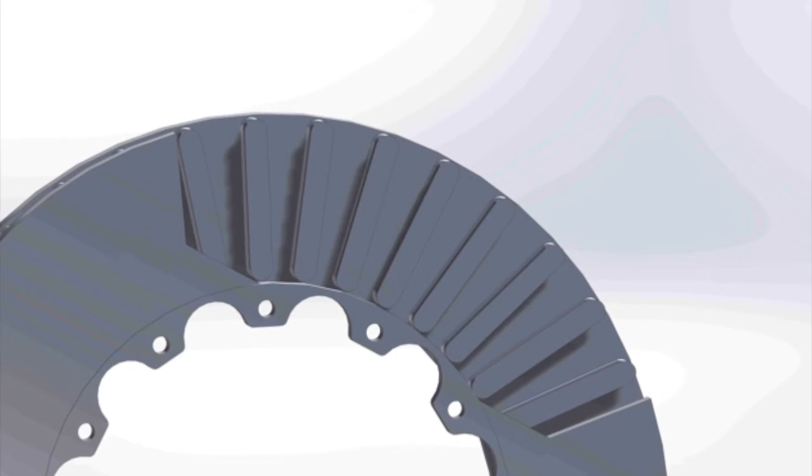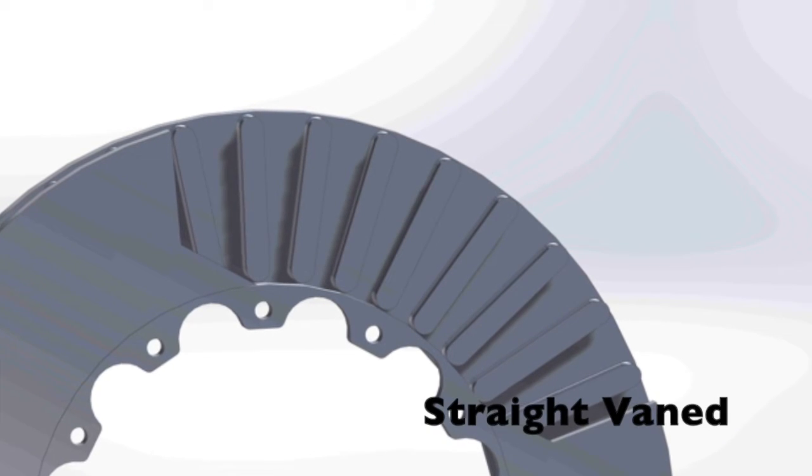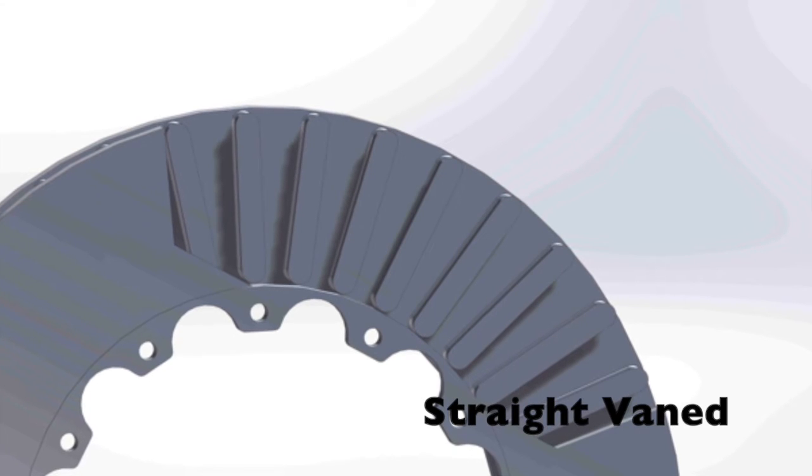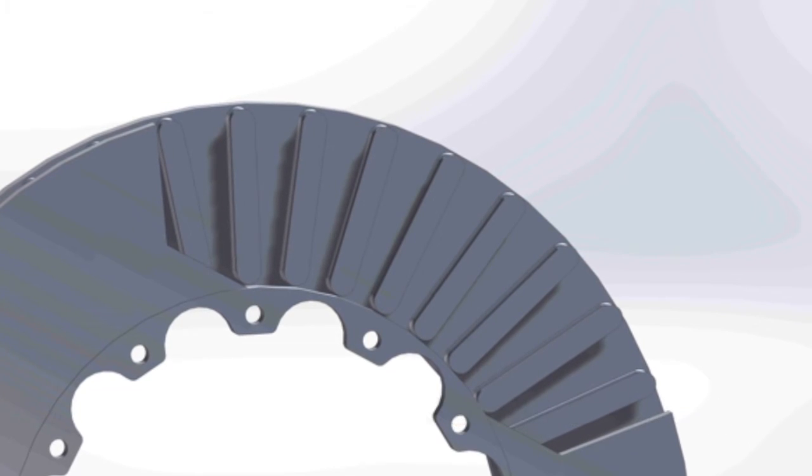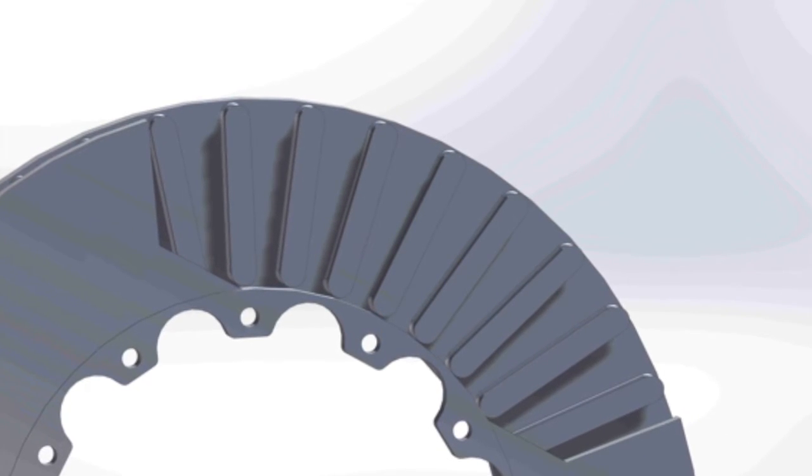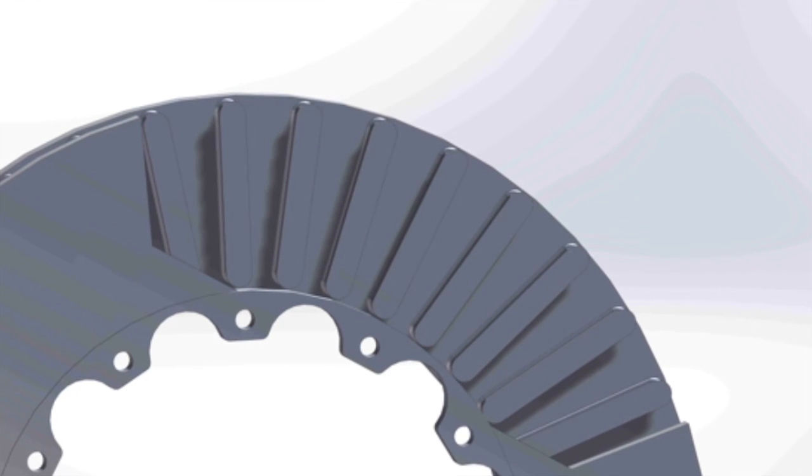Now when it comes to ventilated brake rotors, there are two different kinds. There are straight-veined and curved-veined. Straight-veined is the most popular design, widely used for general brake applications, such as everyday driving.